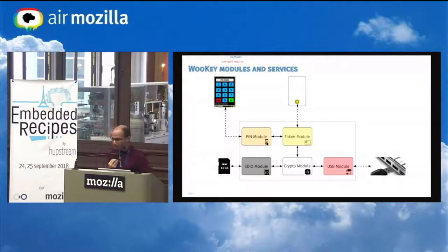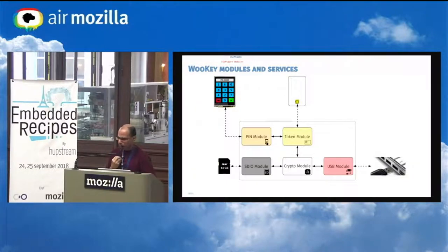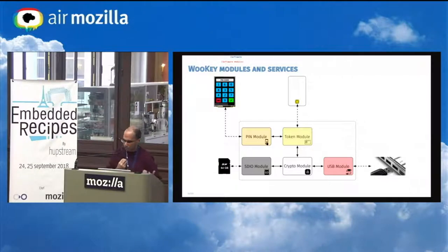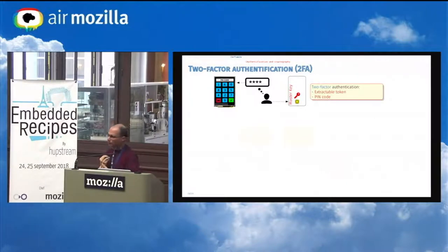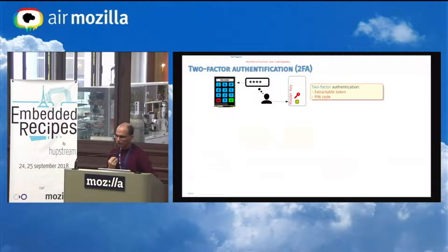To implement both DFU mode and nominal mode, we split our software design into modules: the token module handling the smart card, the PIN module handling the external touchscreen, the USB module handling USB communication, the crypto module handling all cryptographic operations on the board, and the SDIO module handling SD card communication. The smart card and the PIN code via the touchscreen together allow us to bring two-factor authentication. To cryptographically unlock the board, the user must provide their PIN and also provide the smart card keeping secrets safe. Only when both factors are present can we unlock the board.